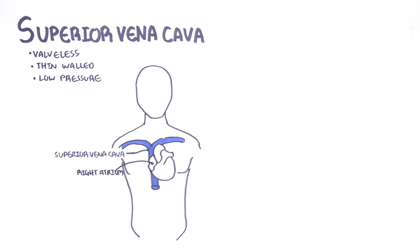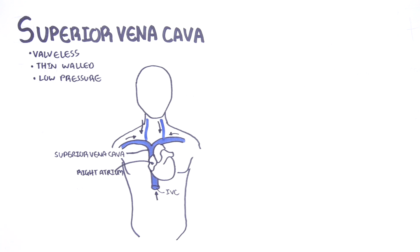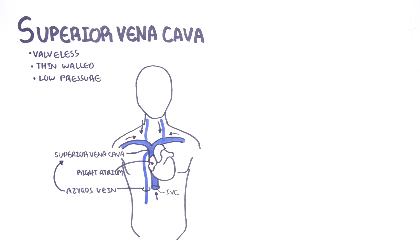The right atrium also drains the inferior vena cava, which contains valves to prevent backflow. The superior vena cava drains blood from the upper body but also drains blood from below the diaphragm via the azygos vein.